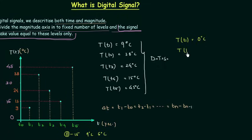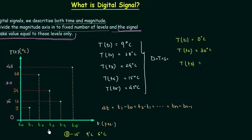Temperature T at t2 is 38, but 38 is also not allowed — it is between 30 and 45. We again take 30 because this is the lower level. So at t2 we have 30 degrees Celsius. Temperature T at t3 is 24. Although 24 is near to 30, we have to consider the lower level, so 15 degrees Celsius is the answer.